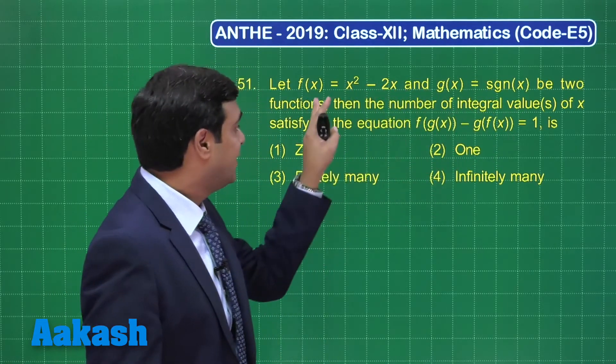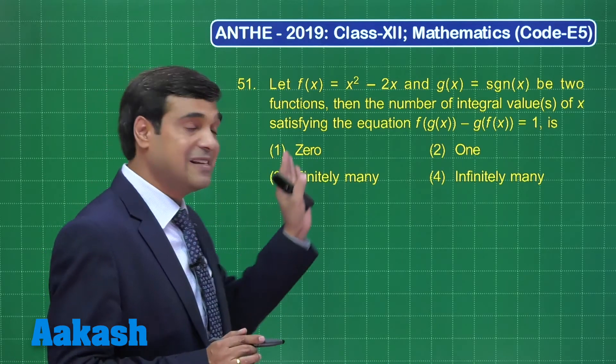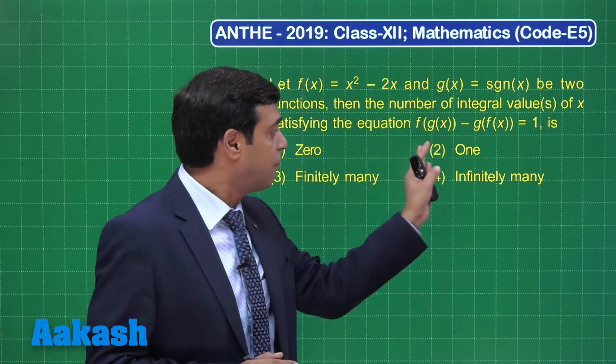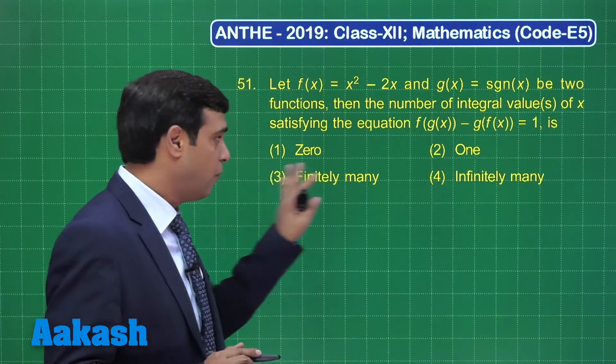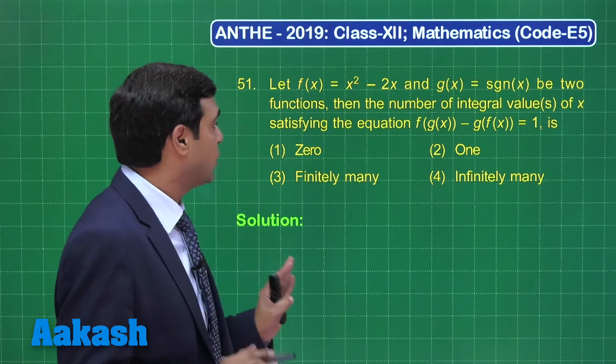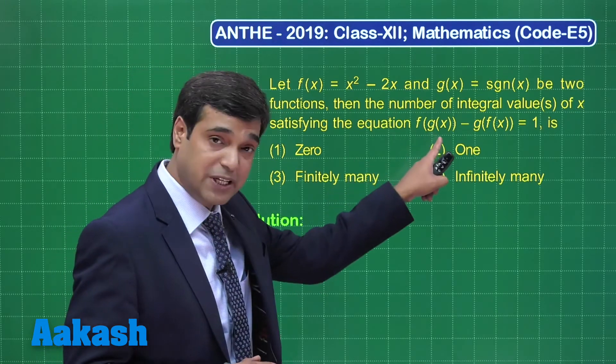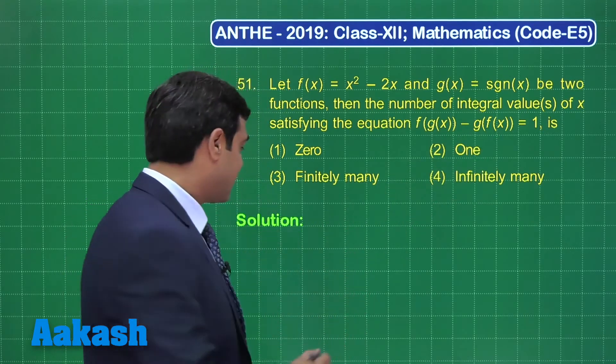Defined in this fashion, then the number of integral values of x satisfying the equation f(g(x)) minus g(f(x)) is equal to one. Now four options are given. So let's begin with this question. What we actually require for it: first f(g(x)), then g(f(x)), then subtract the two. So let's start this question.